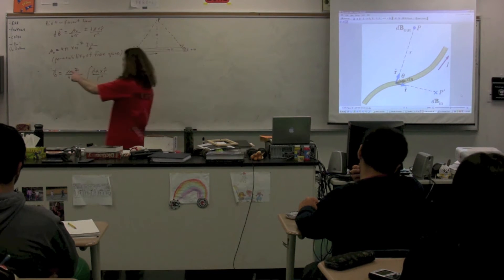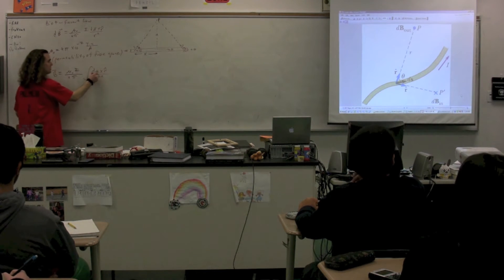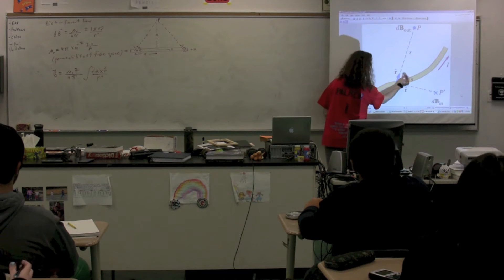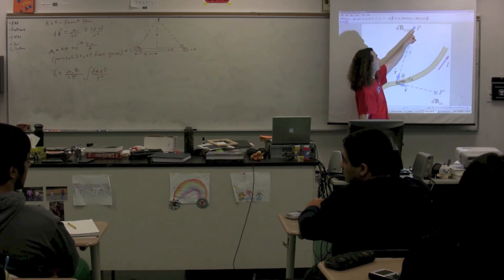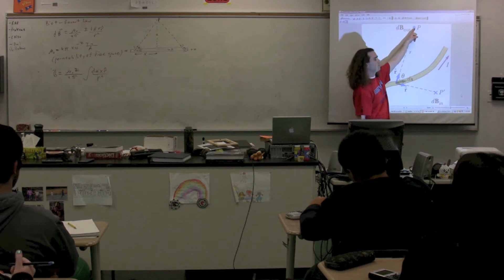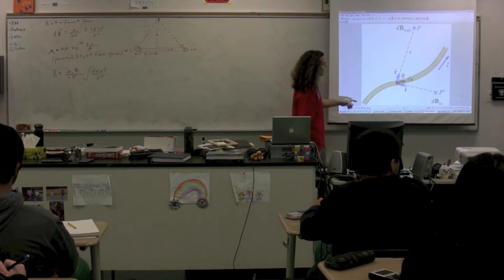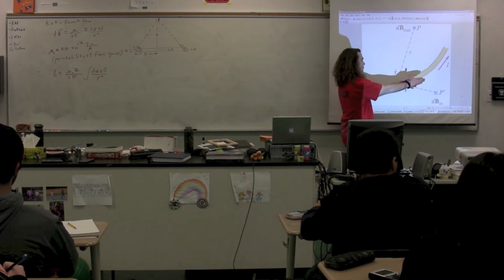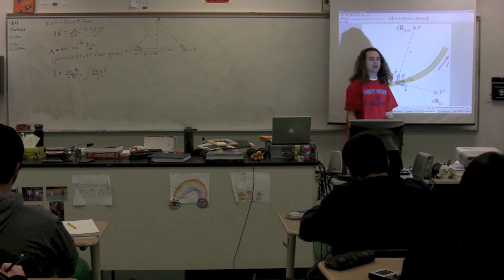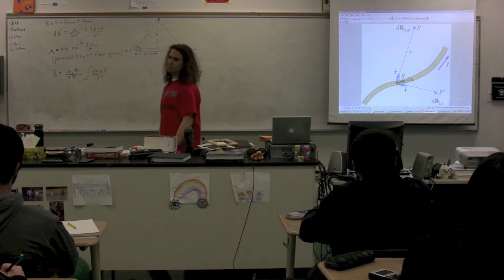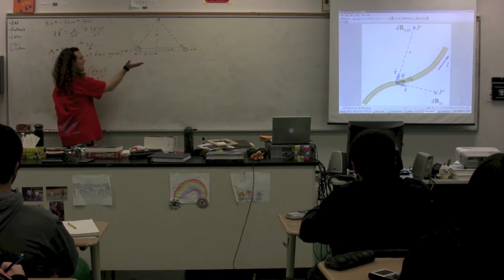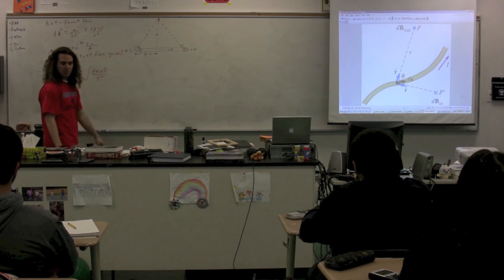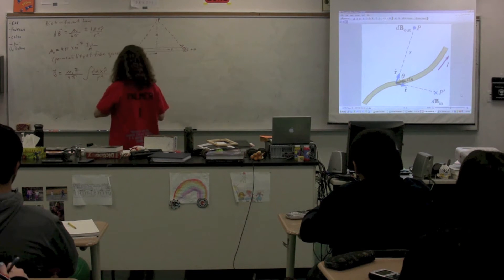Our goal here is to first talk about the direction. Any current-carrying wire is going to have the magnetic field going one way on one side and the other direction on the other side. We have little dS — just a small portion of that wire — and unit vector R pointing to the point where we're talking about the magnetic field. We have dS cross R, which is the cross product — that's the right-hand rule.